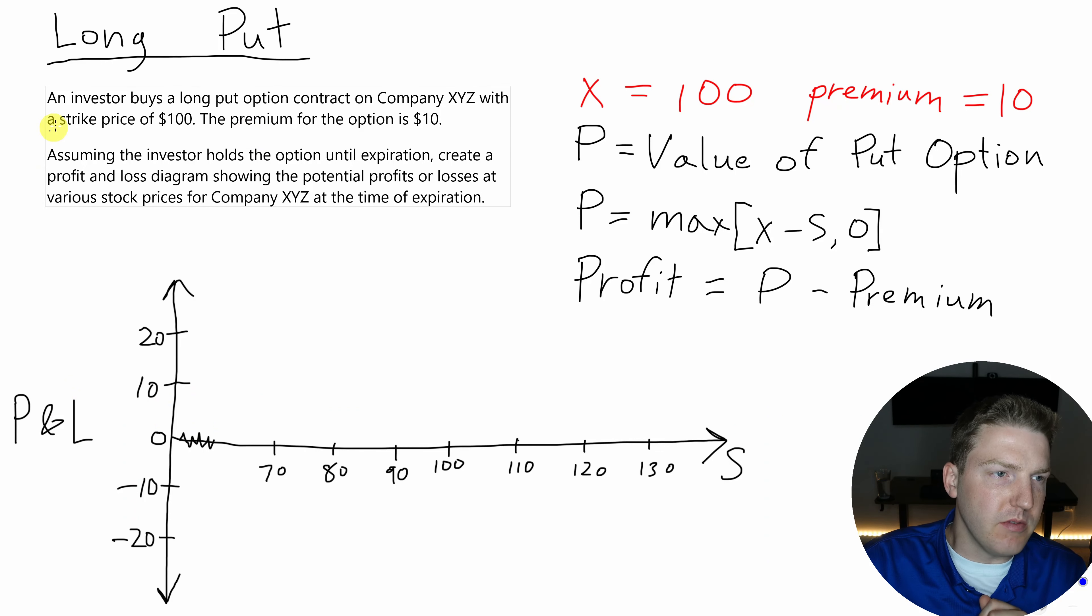Now let's look at how we might do a payoff diagram for an investor that is long a put option. This investor buys a long put option contract, and it has a strike price of $100, just like the call option examples we did, X equals 100. The premium for the option is $10, so that's the same as well. And now we have this new variable, P.